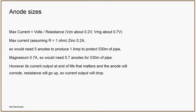The maximum current we get depends on the volts we've got and the resistance of the anode. The drive voltage from zinc is about 0.2 volts — to protect steel we want to get it to about minus 800 or minus 900 mV, so the difference between zinc at minus 1000 mV and steel at minus 800 mV is 0.2 volts. For magnesium the drive voltage is about 0.7 volts. If our anode has a resistance of one ohm, the maximum current from zinc is 0.2 amps. We need one amp to protect 530 meters of pipe, so we need five zinc anodes. For magnesium at 0.7 amps per ohm, that's 0.7 amps per anode — so you'd buy one or protect a bit longer of pipe.